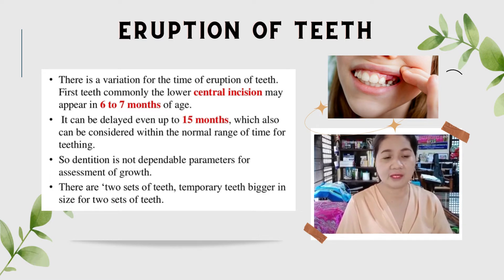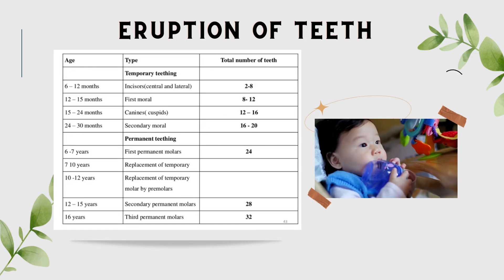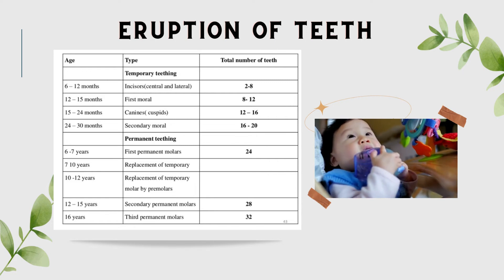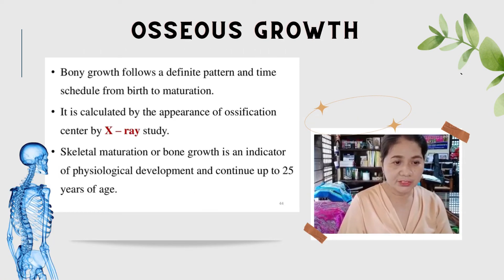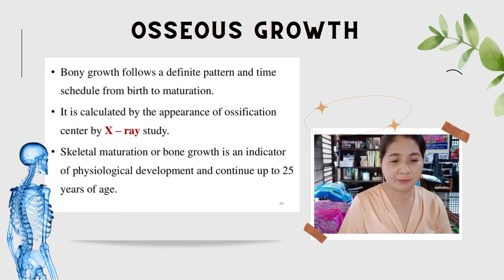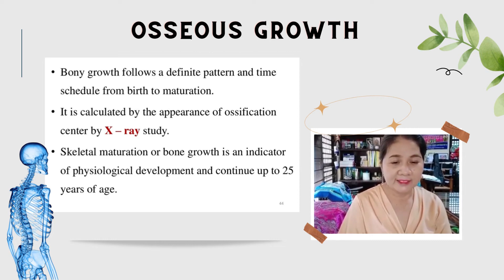There are two sets of teeth: temporary teeth and permanent teeth. Osseous growth follows a definite pattern and time schedule from birth to maturation. It is calculated by the appearance of ossification centers via X-ray study. Skeletal maturation or bone growth is an indicator of physiological development and continues up to 25 years of age.